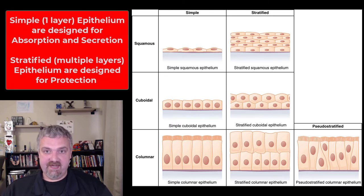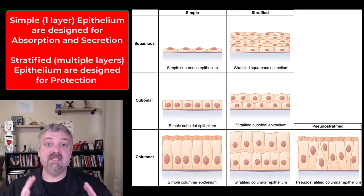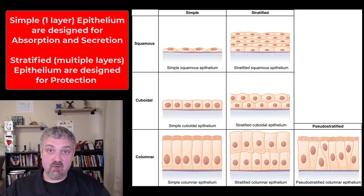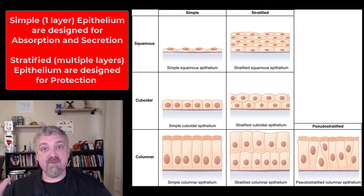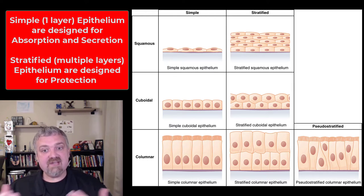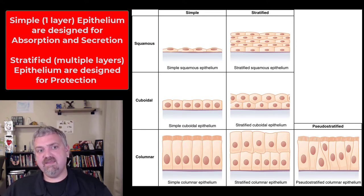Simple versus stratified: a simple type of epithelium is going to be a single layer of cells; stratified is going to be two or more layers, usually quite a few. Simple — think absorption and secretion. They're thin and delicate, but they allow things to move in and out pretty easily. Stratified are going to be thick, so they're tougher — think protection. Of course, simple columnar epithelium offers some protection because they're still pretty thick, but generally speaking, when I hear hooves, I think horses. So simple: think absorption and secretion. Stratified: think protection.